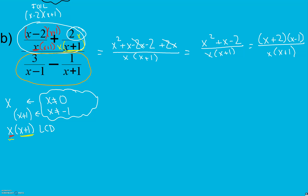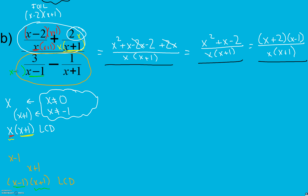Now I've completely simplified my numerator. I'm going to simplify my denominator. The common denominator here — I have (x minus 1) and (x plus 1) — so my common denominator is those two factors multiplied together. In my first fraction I have (x minus 1) and (x plus 1), and I'm going to multiply by the factor I'm missing top and bottom to keep it equivalent. In my second fraction I have the (x plus 1) but I'm missing the (x minus 1), so I multiply by (x minus 1).